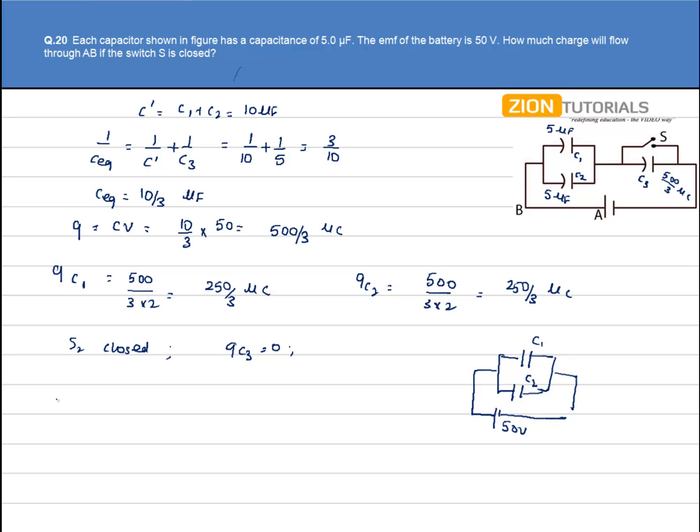So we have now the charge on each of the capacitor as Q is equal to, capacitance is 5 microfarad and potential is 50. So we have 250 microcoulomb on this and on this microcoulomb. So the total charge will be Q1 plus Q2 that is the Q net that is 500 microcoulomb.